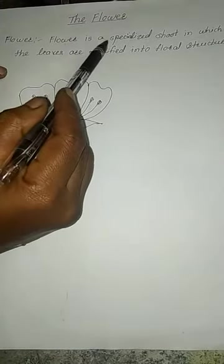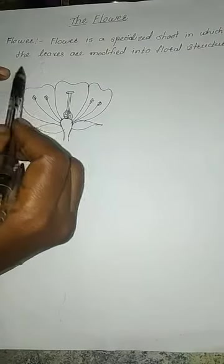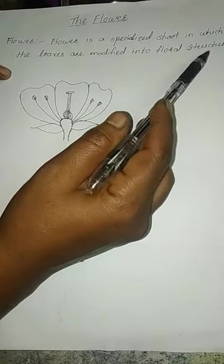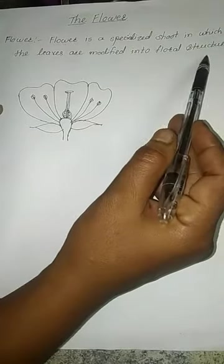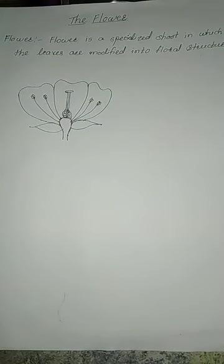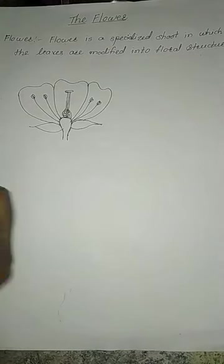Good morning students. I am your bio teacher and in this video we are going to start a new topic: the flower. As you know, the flower is the reproductive part of the plant. Flower is a specialized shoot in which the leaves are modified into the floral structure. You have seen the parts of the plant — leaf, branches, and flower. Now we will see the actual structure of the flower.